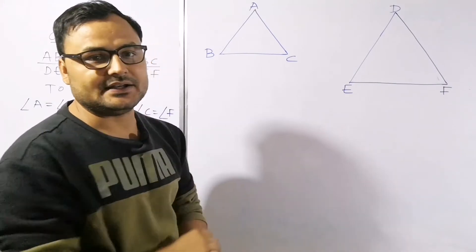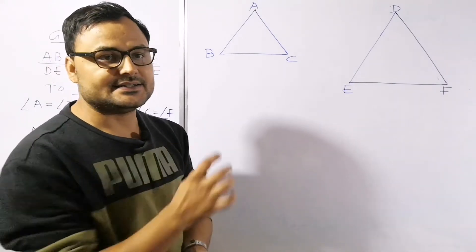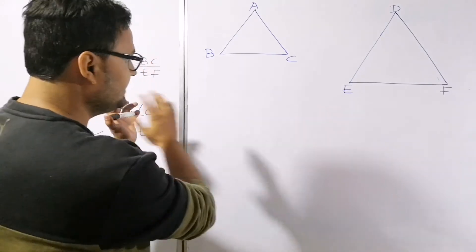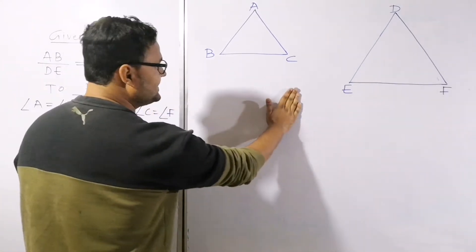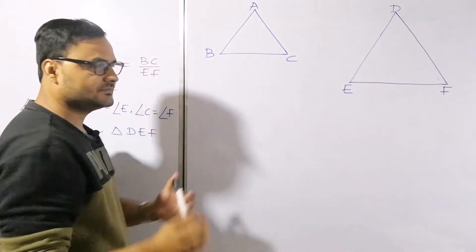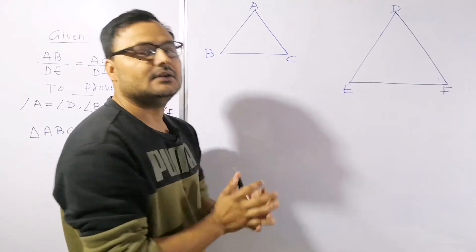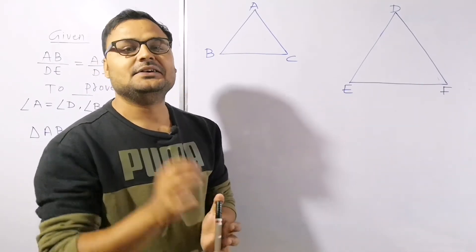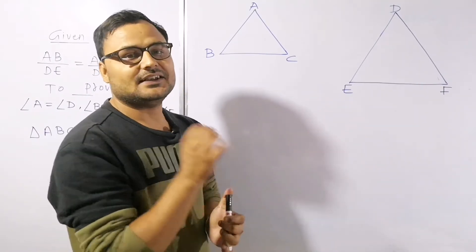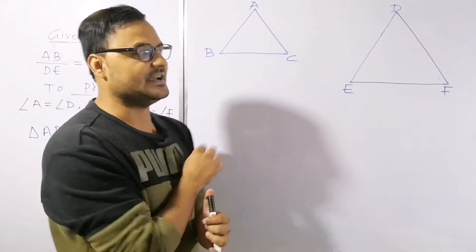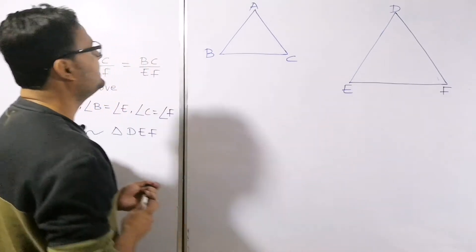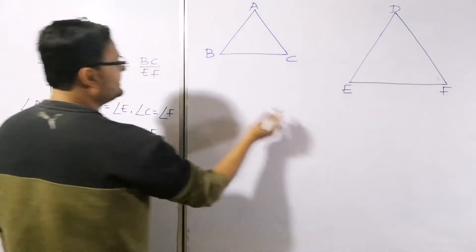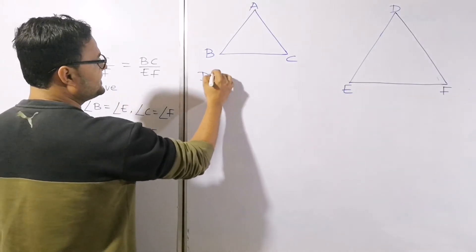This is known as SSS similarity — Side-Side-Side similarity. Now let's start. We have triangles ABC and DEF, and we have to do one construction.